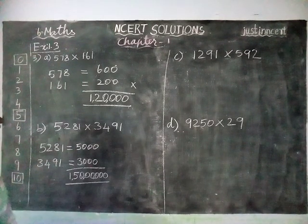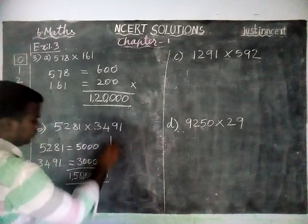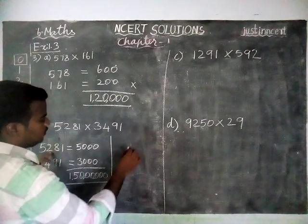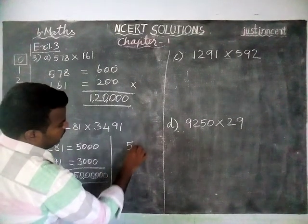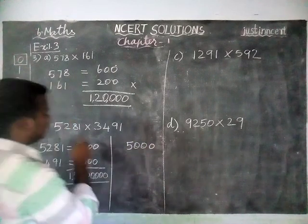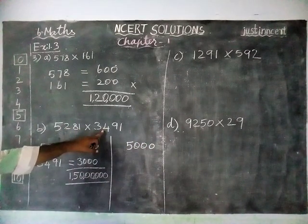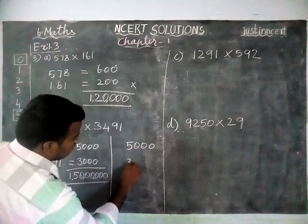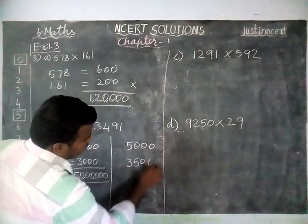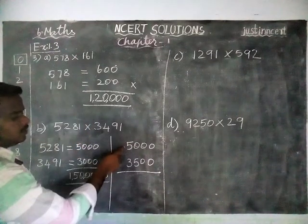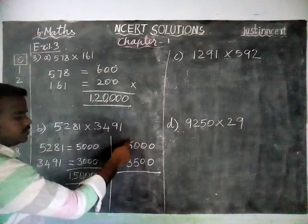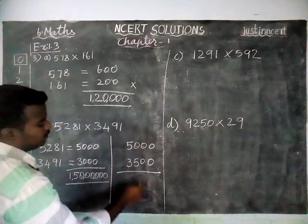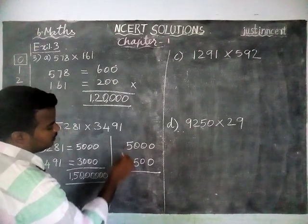If we round off to nearest 100, we will get another answer. The same first number we round off by 1000, the next number we round off by 100. If we round off to nearest 100, we get 3500. This one is rounded to 1000, this one is rounded to 100. So 5000 times 3500.